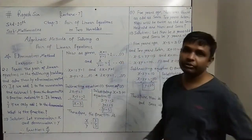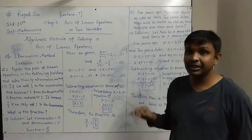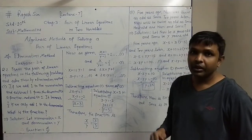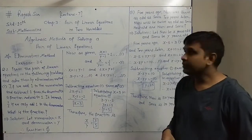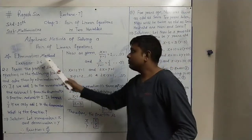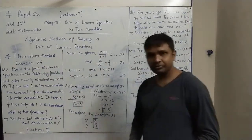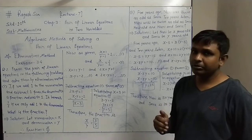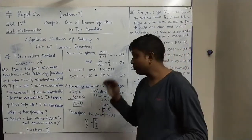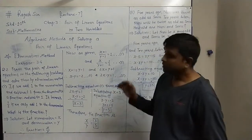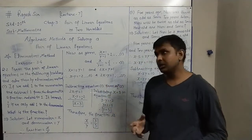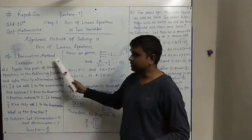In the last lecture, we saw the substitution method in algebraic methods. Now the new method we have in algebraic methods is the elimination method. By the substitution method we got the solution of a pair of linear equations; now we will get the same solution but by the linear elimination method.